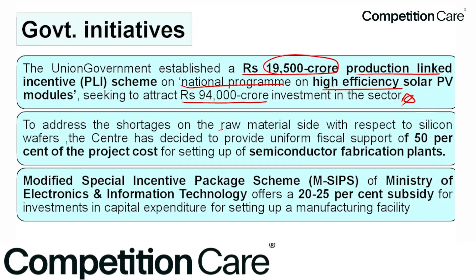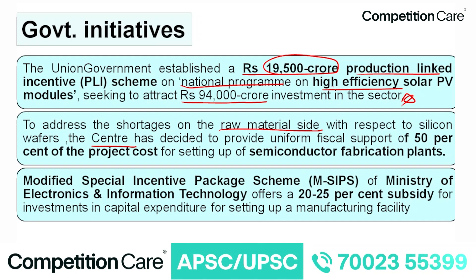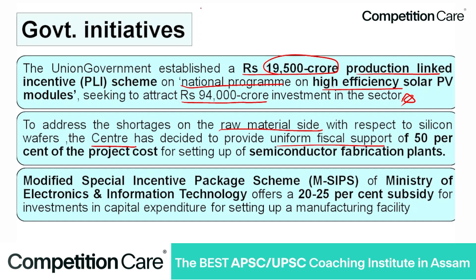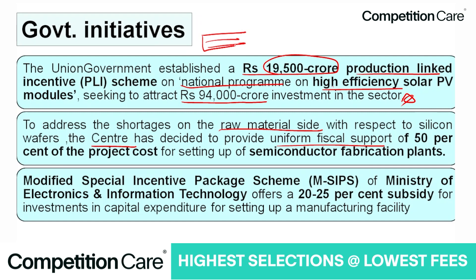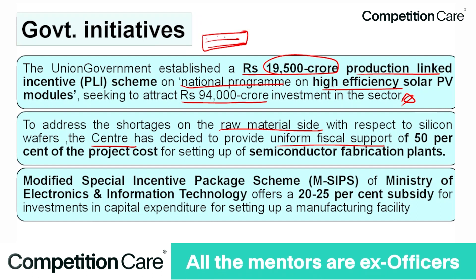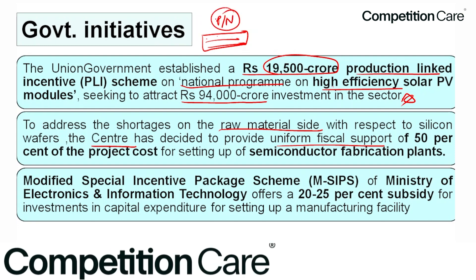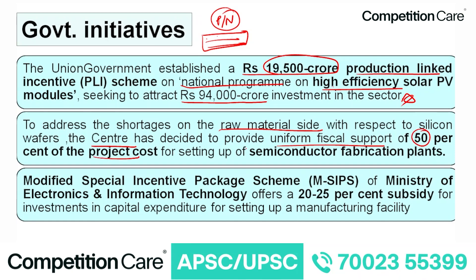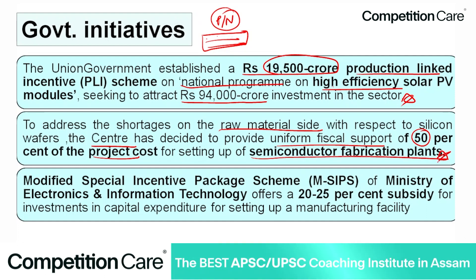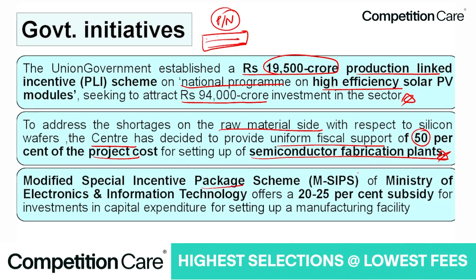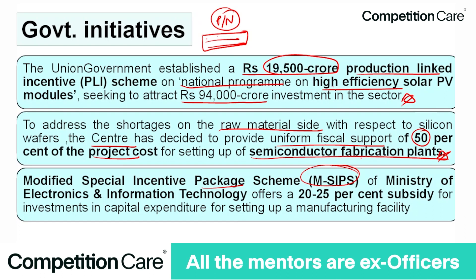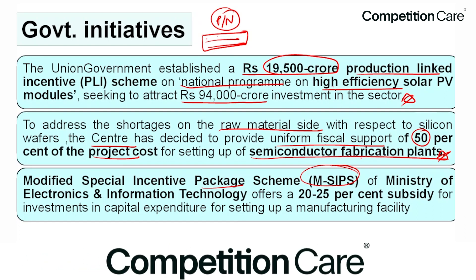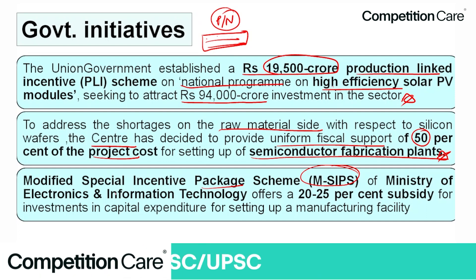To address the shortage of raw material, specifically silicon wafers, the Centre has decided to provide uniform fiscal support of 50 percent of the project cost for setting up semiconductor fabrication plants under the Modified Special Incentive Package Scheme (M-SIPS). M-SIPS is related to solar power panels under the Ministry of Electronics and Information Technology, which offers 20 to 25 percent subsidy on capital expenditure for setting up manufacturing facilities.